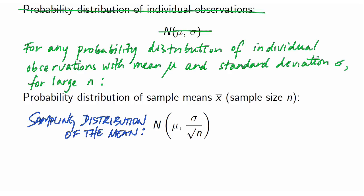You may be concerned that the sampling distribution is in terms of quantities that we don't actually observe — in particular, it's in terms of mu and sigma. Mu and sigma are properties of the probability distribution of the individual observations, and they exist in the theoretical world, so we don't know them. How to deal with this will be left for future work in the development of methods for statistical inference.